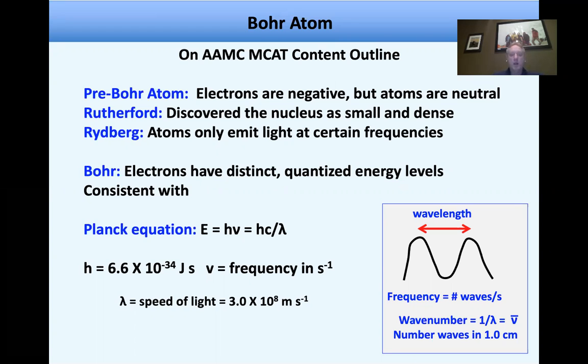And then Rydberg figured out that atoms only emit light at certain frequencies. So what Bohr came up with is that electrons have distinct quantized energy levels, and that was consistent with the Planck equation, which is E equals h nu, or E equals hc over lambda. Now, we know that the Planck constant is 6.6 times 10 to the minus 34 joules per second. You should definitely remember that for the MCAT. This is the frequency, and the speed of light, of course, is 3 times 10 to the eighth meters per second.